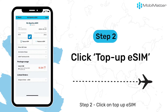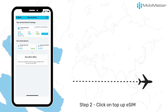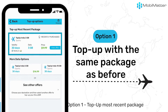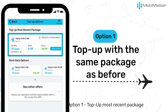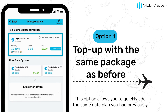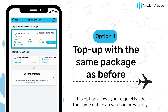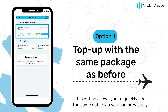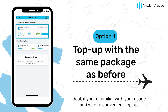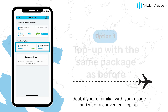Step 2: Click on Top Up eSIM. You will find two top up options here. Option 1: Top Up Most Recent Package. This option allows you to quickly add the same data plan you had previously — ideal if you're familiar with your usage and want a convenient top up.